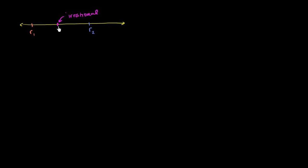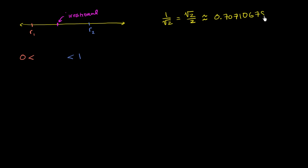We're going to start by thinking about the interval between 0 and 1. We know that there are irrational numbers there. In fact, one that might pop out at you is 1 over the square root of 2, which is the same thing as the square root of 2 over 2, approximately equal to 0.70710678118. This thing does not repeat, and it's clearly between 0 and 1.